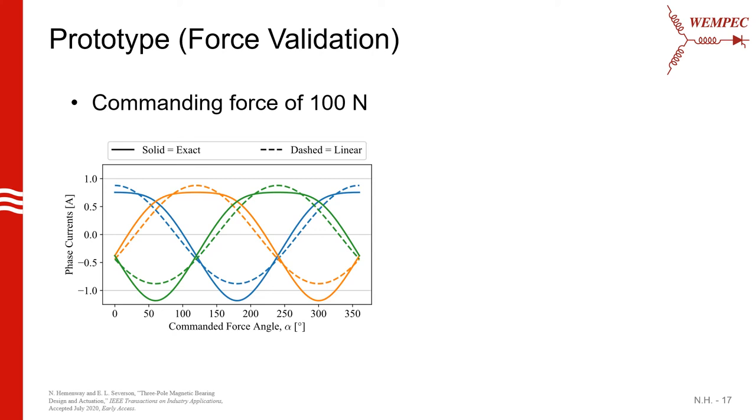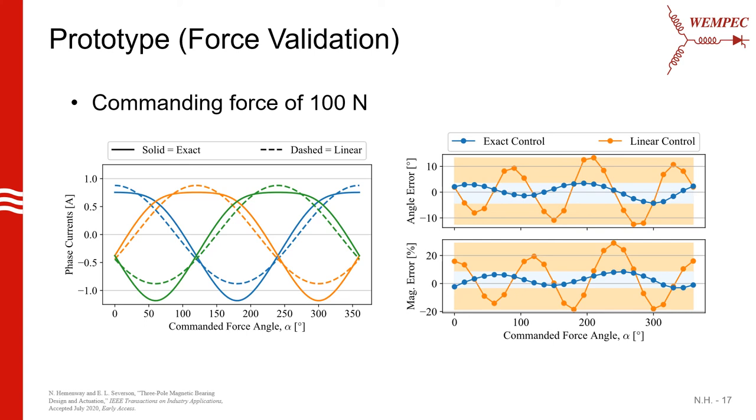So we've got our bearing characterized. Let's now use it as a test platform to validate that the inverse solution actually eliminates force vector error like we expect it to. What we'll do is command our bearing to produce a force of 100 newtons at all force angles using both the linear and exact inverse methods. When we do that, we get the following current waveforms. Note that the x-axis is the commanded force angle and not time. When we run these current waveforms into our bearing prototype and measure the force output, we get the following plot that shows the force vector error that results using both methods.